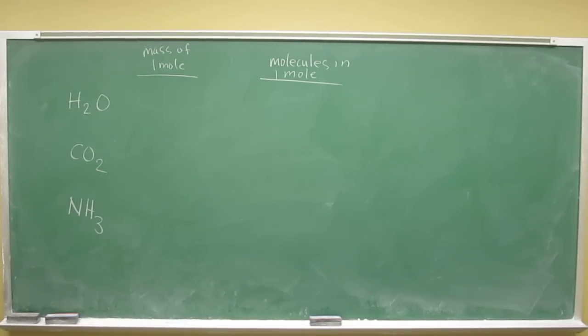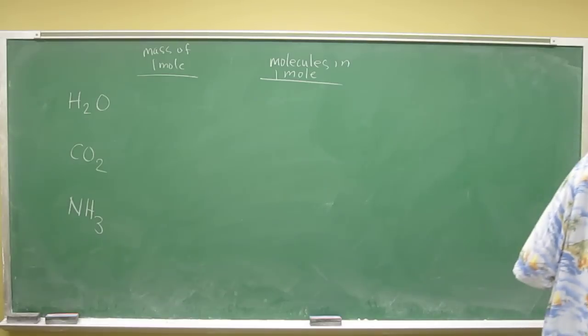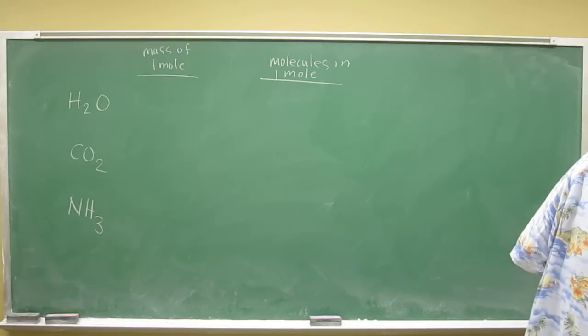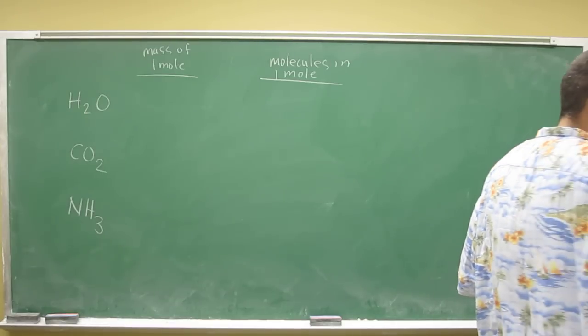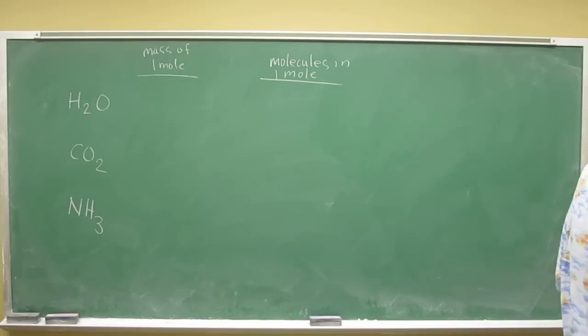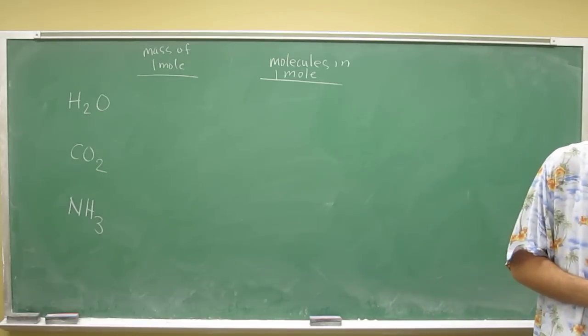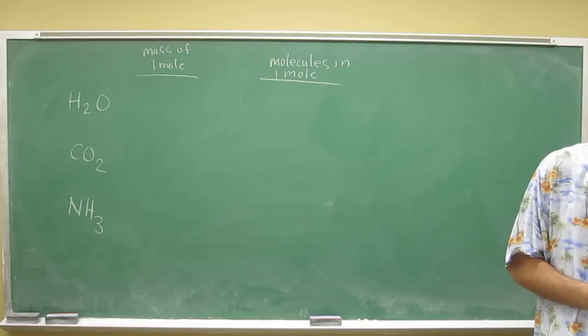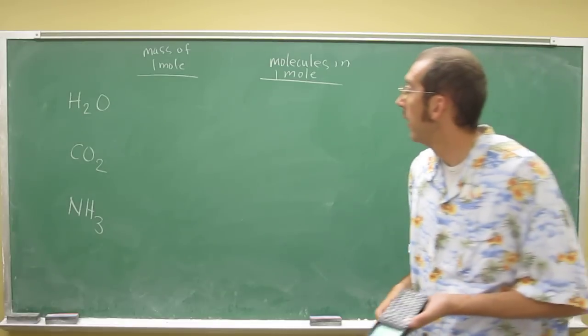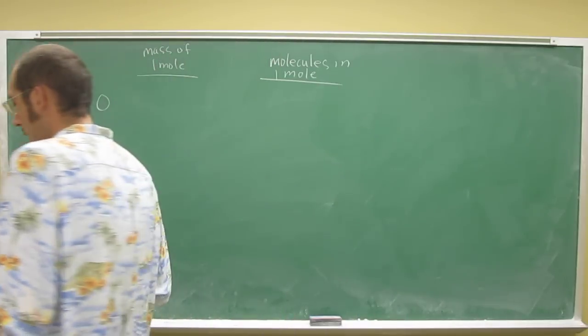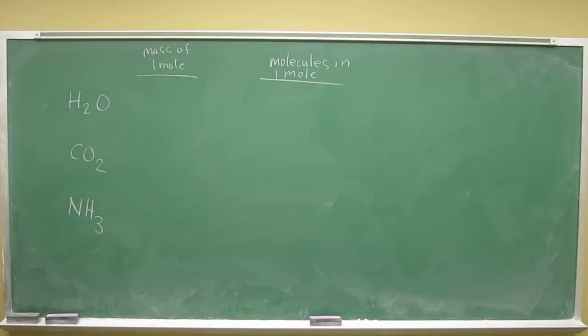Let's do this problem very similar to the last problem in the lecture notes, only referring to the periodic table. How many grams does a mole of each of these molecules weigh and how many molecules are in a mole of each of these substances? So the first one is water. In order to figure out the mass of a mole of water, you've got to figure out what the molecular weight of one molecule is.